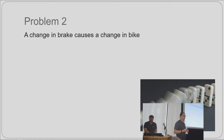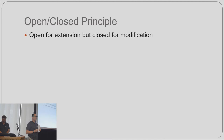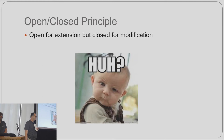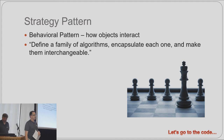Next problem: a change in the brake causes a change in the bike. We have to go into the bike code to make that change to the braking mechanism. That's a violation of the Open/Closed Principle, which says a class or module is open for extension but closed for modification. The intent is that we write code such that the axis of change is extensible without modifying the code. If you have to change code for the same reason more than once, you should figure out how to extract those modifications out.